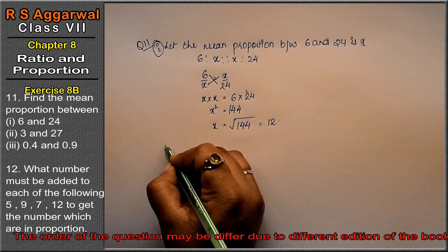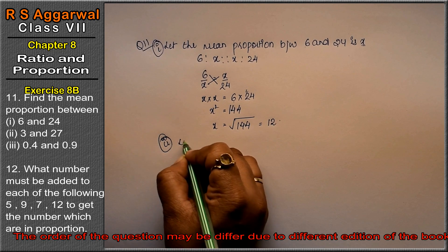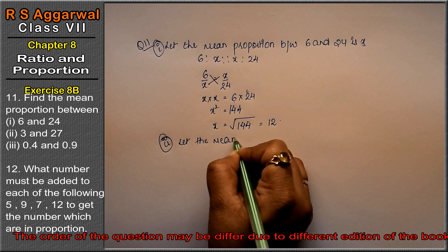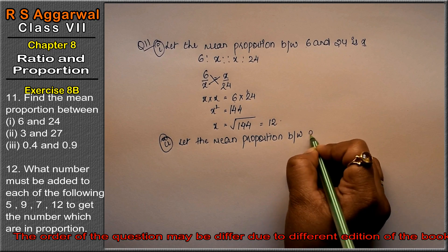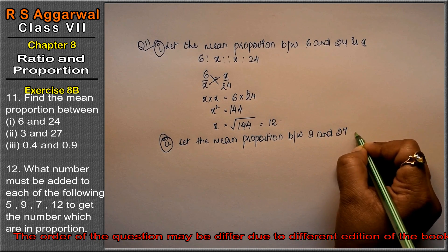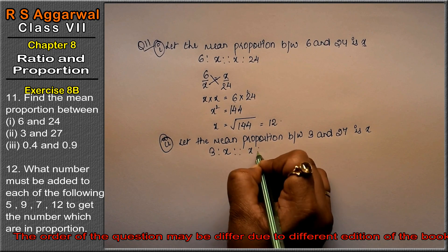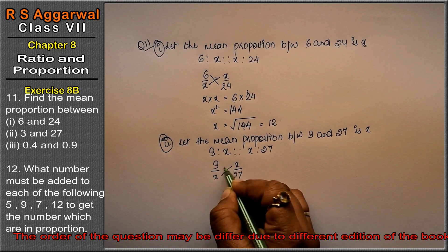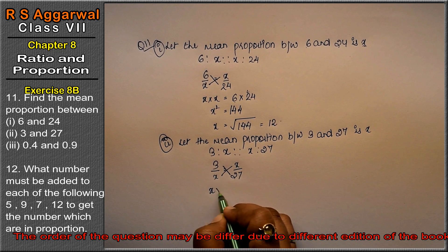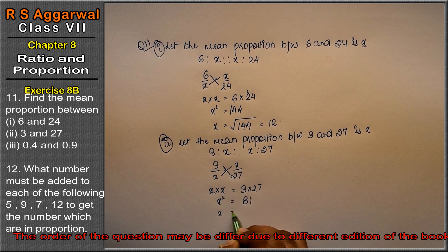Let us do the second part. We have to find the mean proportion between 3 and 27. Let the mean proportion be x. So we write 3 upon x equals x upon 27. Cross multiply: x into x equals 3 into 27. So x squared equals 81, and x equals the square root of 81, that is 9. So the answer is 9.